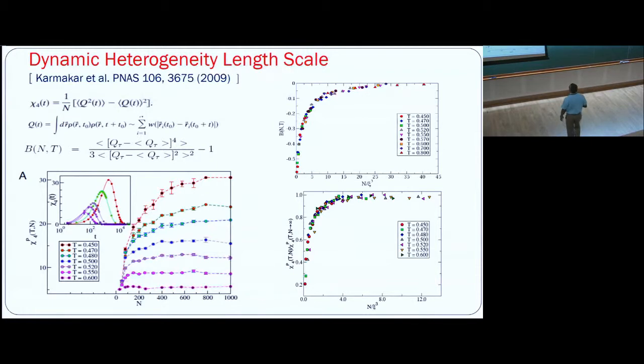This is one which we did quite some time ago in 2009 with Chandan and Srikant. We looked at the higher order correlation function. I don't have much time to tell why you need to go to higher order correlation function, but basically lower order, the two-point correlation function, is not good enough. One needs to go to fourth order correlation function and this quantity has all the signature. What we looked at is the finite size effect of this four-point susceptibility chi4.